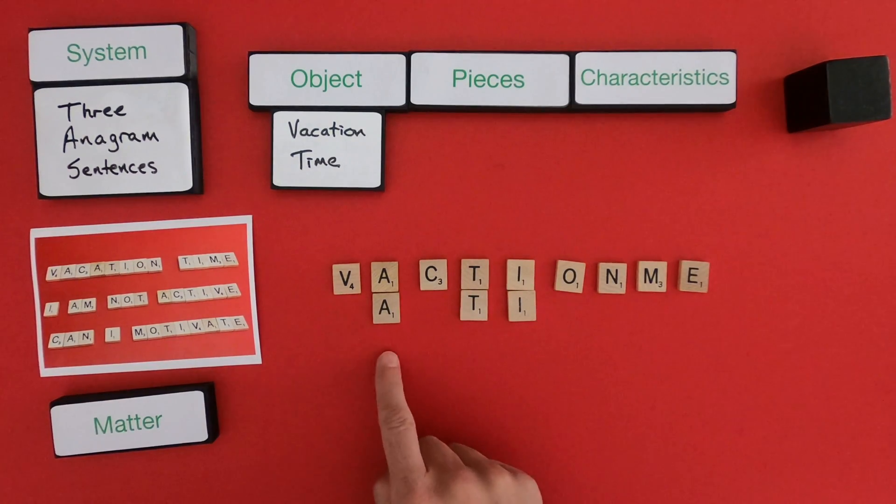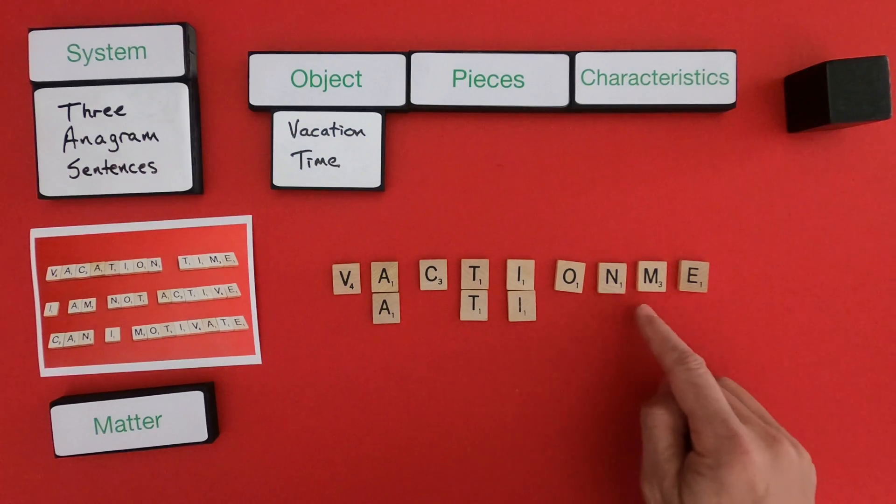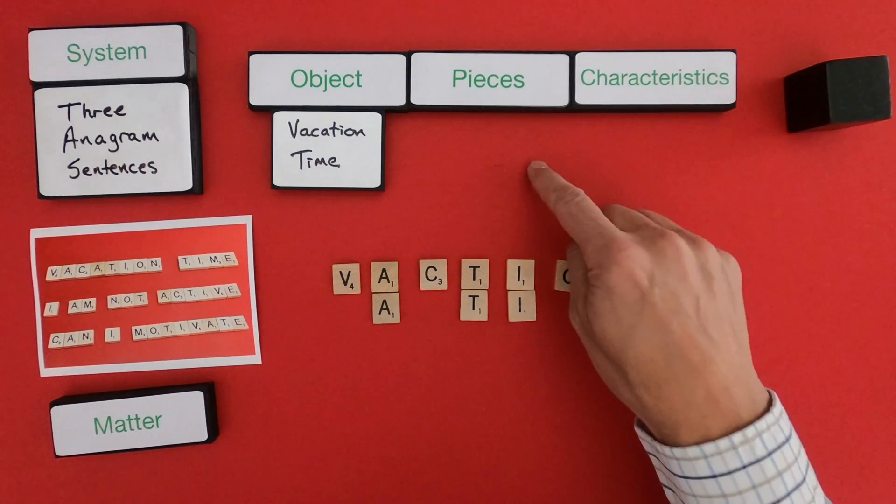Okay, so I've got one V, two A's, a C, two T's, two I's, an O, an N, an M, and an E. So let me define those as the pieces.